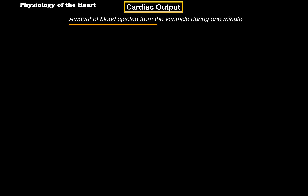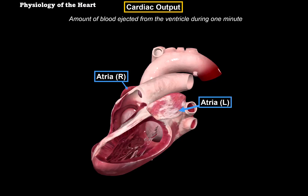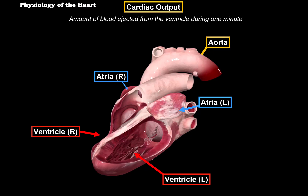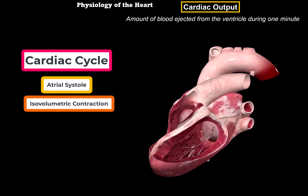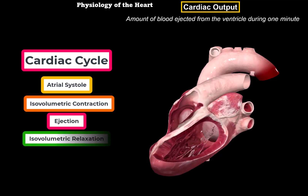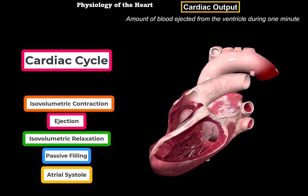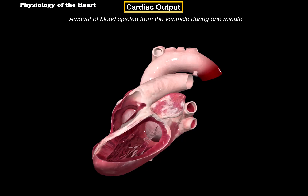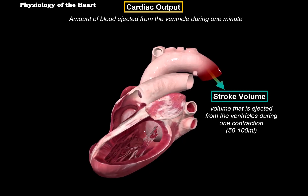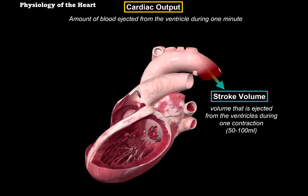How do we define cardiac output? Cardiac output is the amount of blood that is ejected from each ventricle during one contraction. Here's the heart — we have the right and left atria, the right and left ventricles, and the aorta. In the previous video, we went through the cardiac cycle, which includes all the mechanisms that happen in each phase: atrial systole, isovolumetric contraction and the ejection phase (the systolic phase), and isovolumetric relaxation and the passive filling phase (the diastolic phase). With each contraction, a certain amount of blood exits each ventricle — that amount is called stroke volume, about 50 to 100 milliliters on both sides.